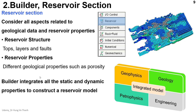The builder integrates static and dynamic properties to construct the reservoir model. For example, from the real physics, we can understand the structure of the reservoir, and CMG will keep the characteristics of that real physics. Regarding geology, it will keep the distribution of the model in the CMG framework. For petrophysics, it considers rock-fluid interaction information. Regarding engineering, you can perform history matching, production, or uncertainty analysis inside CMG.